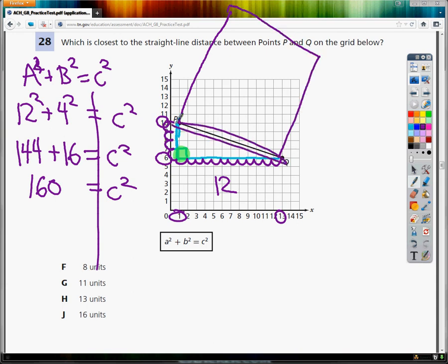But I just need this bottom part, so the root. So I'm going to take the square root of 160, and if I take the square root of 160, C is equal to 12.65.